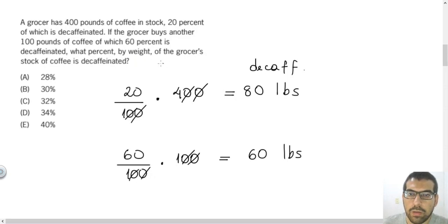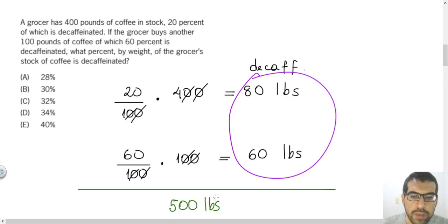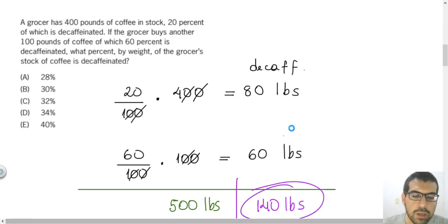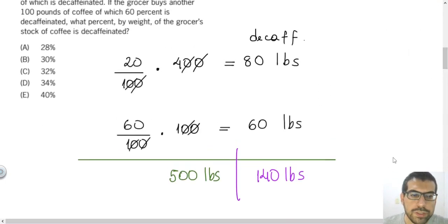Then the question asks, what percent by weight of the grocer's stock of coffee is decaffeinated? As you can see, the amount of coffee that the grocer has now can be evaluated as 400 plus 100. So the grocer has 500 pounds of coffee in the stock. And the amount of decaffeinated coffee from that stock will be 80 plus 60. So it will be 140 pounds.